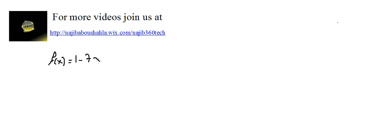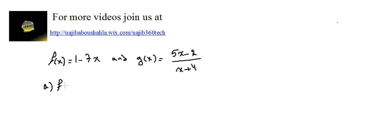Algebra functions video number two — it's about composite functions. We have f(x) equal to 1 minus 7x, and g(x) equal to (5x minus 2) over (x plus 4). For part a, we need to find f of g of x.